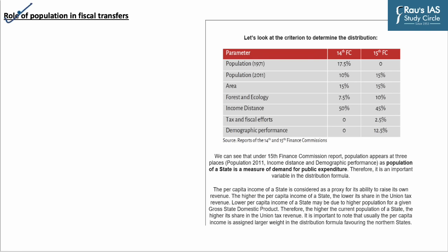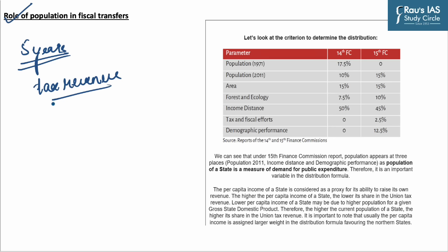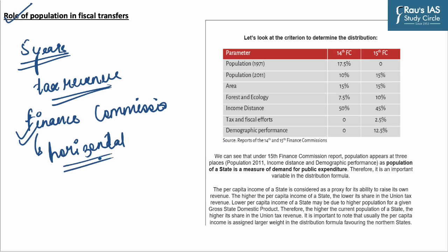Moving on, let us discuss the role of population in fiscal transfers. Once in five years, the Union Government constitutes a Finance Commission to recommend, among other things, the share of each state in the assigned tax revenue of the Union. Every Finance Commission recommends a formula for horizontal distribution of Union Government tax revenue among the states. Let us look at the criteria to determine the distribution.